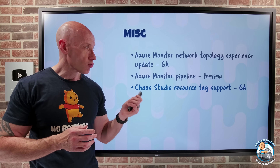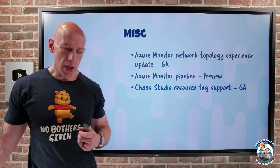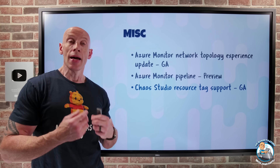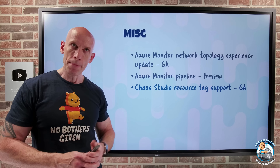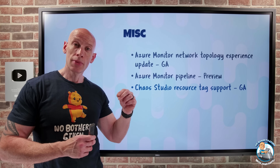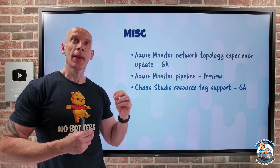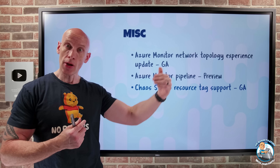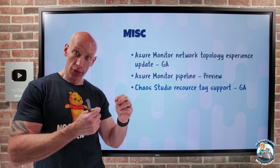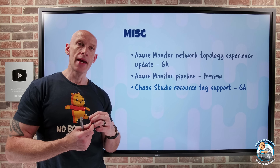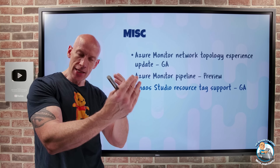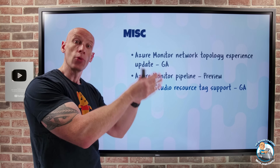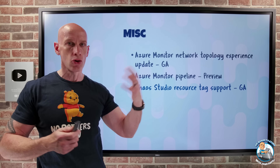Chaos Studio now supports resource tagging. In Chaos Studio you have experiments that drive the types of failures you want to introduce, and there's a cost associated with that. Now I can apply a resource tag to different experiments, which is useful for enterprises wanting to track the cost of different experiments. When reviewing billing, I can see that experiments tagged with one value cost X, and experiments tagged with a different value cost Y — helping with chargeback or showback.